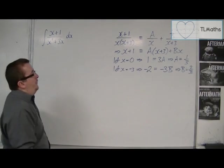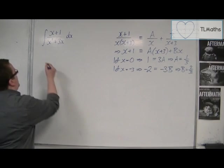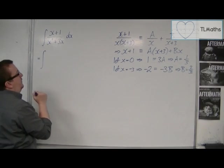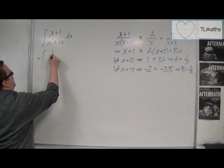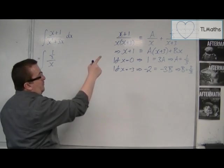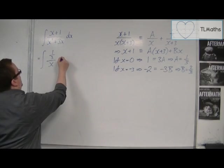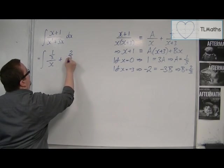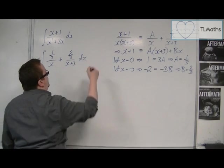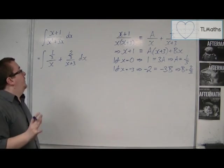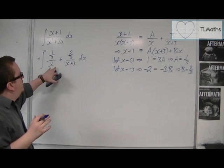So what we can now do is write this as a over x. So 1 third over x plus b over x plus 3. So plus 2 thirds over x plus 3 dx. Now, in the previous video, I said that you don't want to leave your answers in this format.